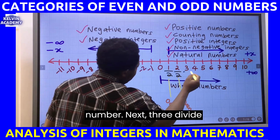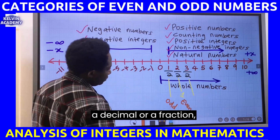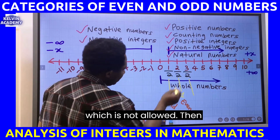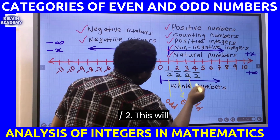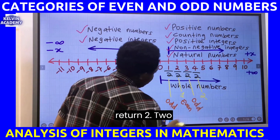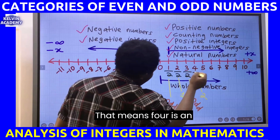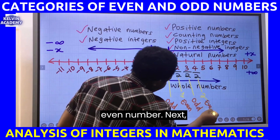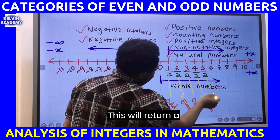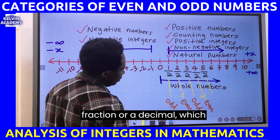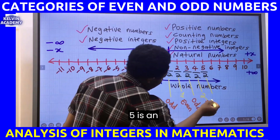Next, three divided by two will return a decimal or a fraction, which is not allowed, so this becomes an odd number. Next, four divided by two will return two. Two can be found on the number line, so four is an even number. Next, five divided by two will return a fraction or a decimal, which is not allowed, so five is an odd number.